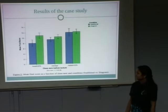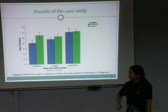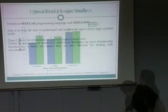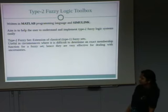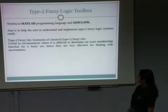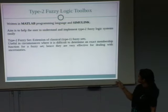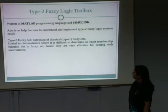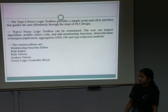There are many computer applications available for learning. One application covered here is the fuzzy logic toolbox, which is a type 2 fuzzy logic toolbox written in MATLAB and Simulink. The main aim is to help users understand and implement a type 2 fuzzy logic system. Type 2 fuzzy system is an extension of the classical type 1 fuzzy set — type 1 produces a crisp output while type 2 deals with uncertainties. This toolbox provides a simple point-and-click interface that guides the user through the steps of fuzzy logic system design.